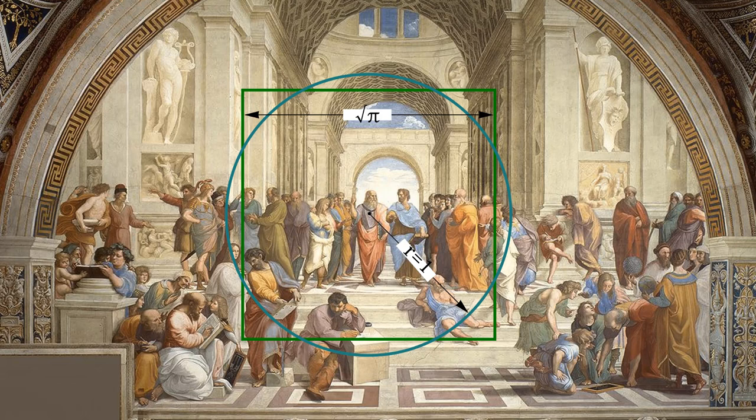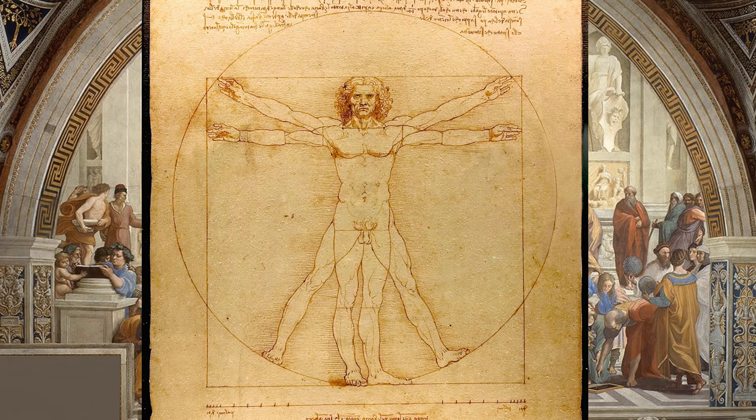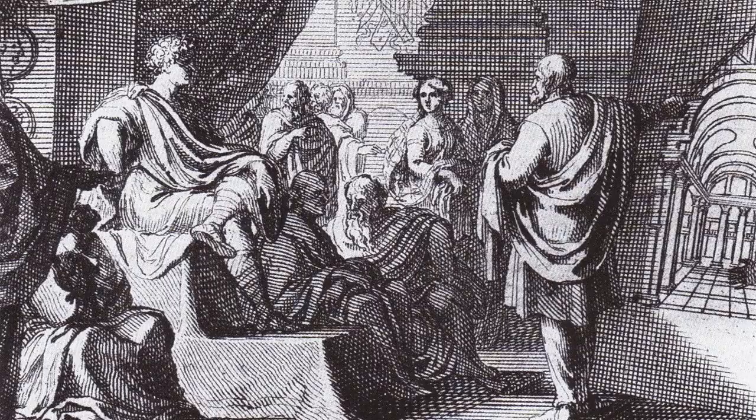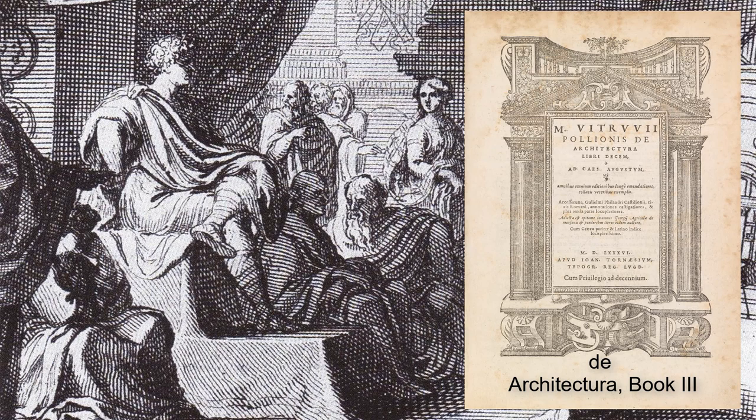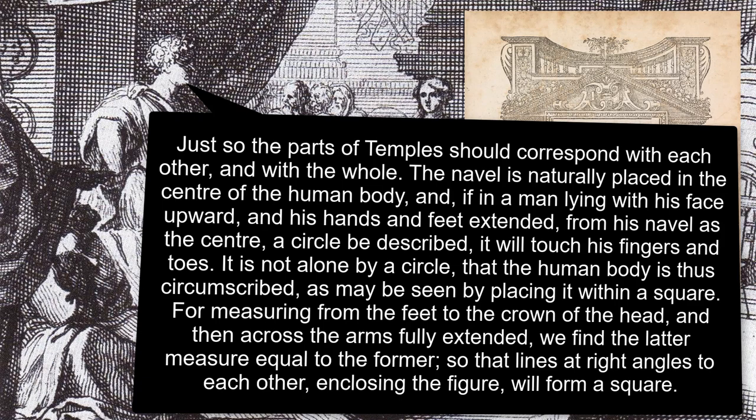Numerous approximate solutions have been proposed, and perhaps the most famous is Leonardo da Vinci's Vitruvian Man. The Vitruvian Man was sketched by da Vinci in 1490 and was heavily influenced by the first century BC Roman temple architect Vitruvius. In his book, Vitruvius wrote: 'just so the parts of temples should correspond with each other and with the whole.'